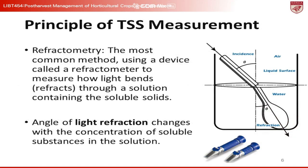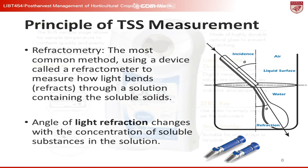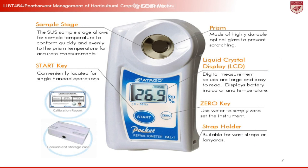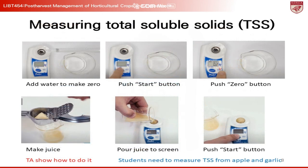A refractometer measures total soluble solids (TSS) by analyzing how light bends, or refracts, through a solution. The degree of refraction varies with the solution's concentration of soluble substances, allowing for the determination of TSS based on this principle. These days, digital refractometers are also available and are easy to use. Below is a breakdown of each part's name and function within the instrument.